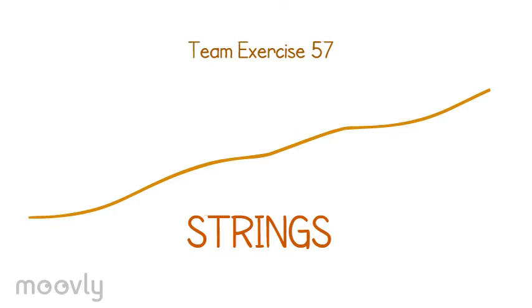Team exercise 57: Strings. Necessities: A ball of yarn.